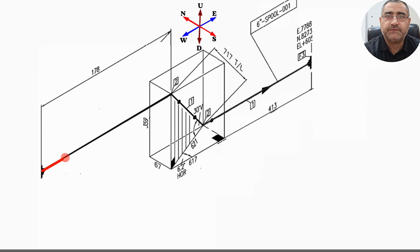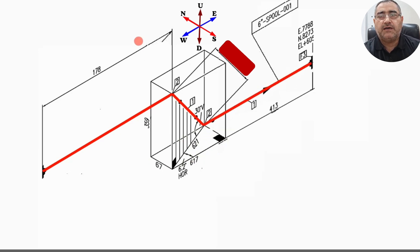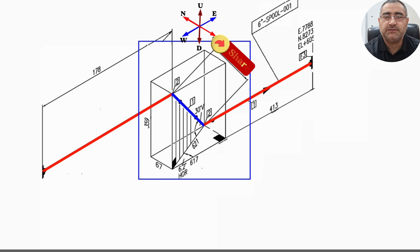In this fabrication isometric drawing, the pipeline travels eastward. This pipeline first moves downward by 359 mm, then continues eastward for 617 mm, and finally shifts northward by 67 mm, and finally continues eastward again. As you can see in this fabrication isometric drawing, the pipeline displacement forms a right-angle parallelogram, as shown in the video. To verify the accuracy of this pipe section length, we'll use the method we learned to calculate it.